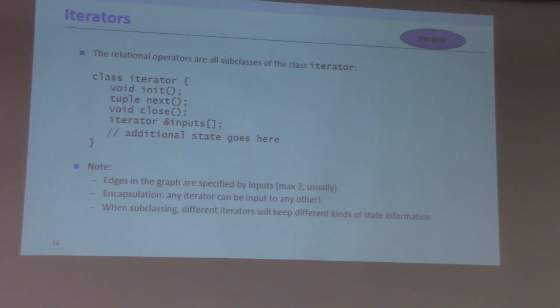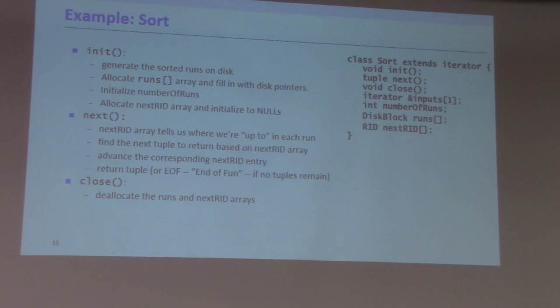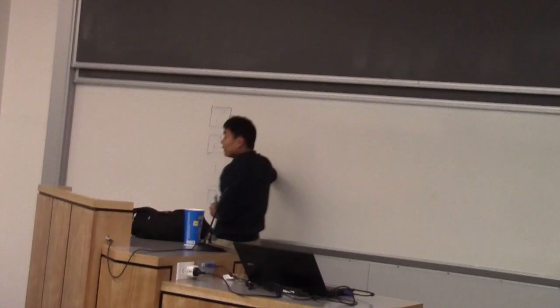Here is an example of using the iterator interface to implement sorting. If you remember the external merge sort algorithm, what do we really need? We need some internal member state variables such as number of runs — at any particular phase I need to know how many runs I have. I also need pointers to the beginning address of each run. Each of these is a single run, and each run is multiple pages, all sorted within the run.